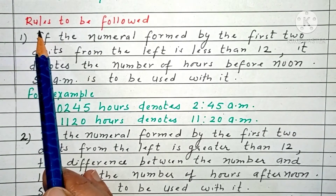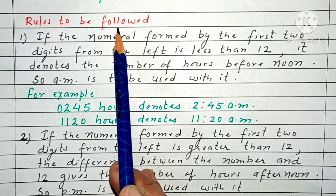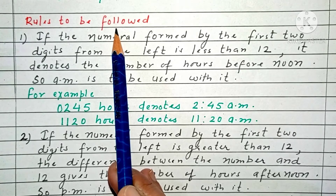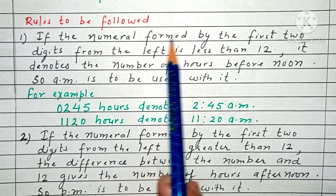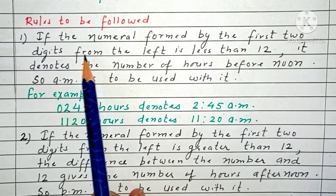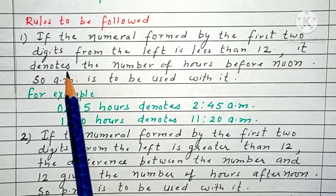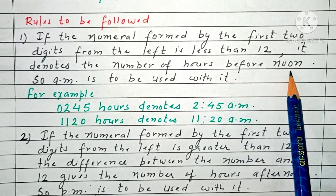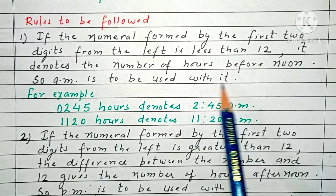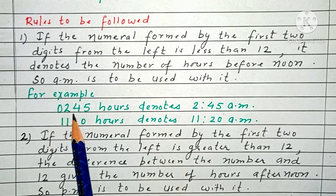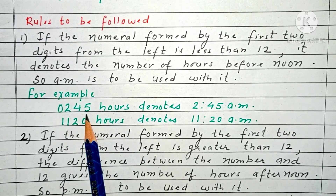Now I am going to explain the rules to be followed while changing a 12-hour clock time to a 24-hour clock time. Rule 1: if the numeral formed by the first two digits from the left is less than 12, it denotes the number of hours before noon, so AM is to be used with it. For example, 0245 hours denotes 2:45 AM.